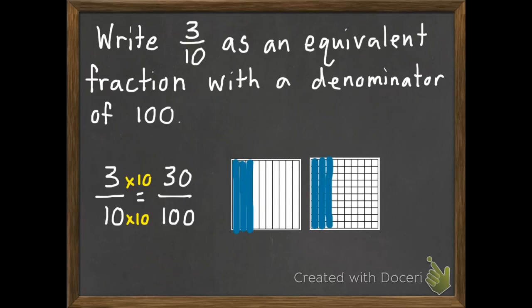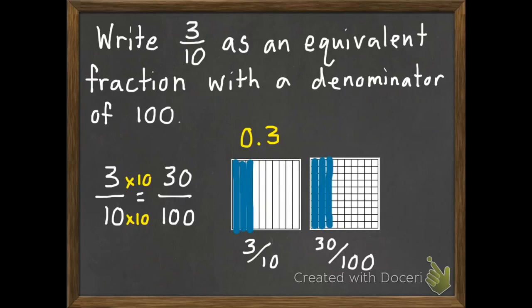If we were thinking about money, three tenths would be like three dimes, and thirty hundredths would be like thirty pennies — and that would be the same amount of money. So three tenths is equivalent to thirty hundredths. And we can write this as a decimal: three tenths or thirty hundredths.